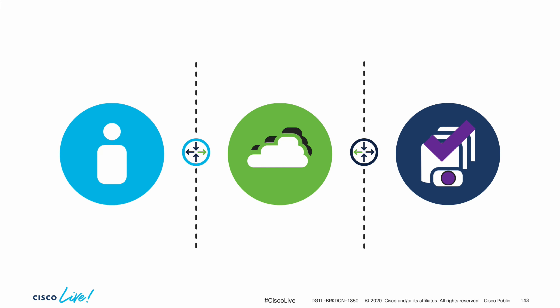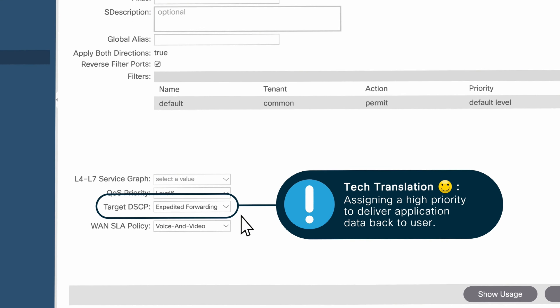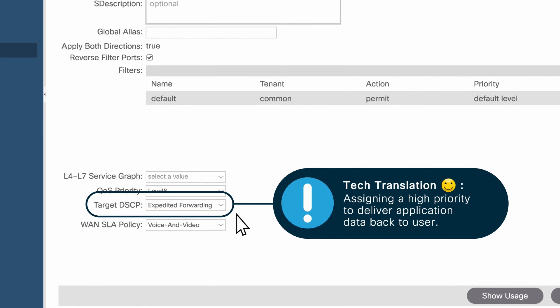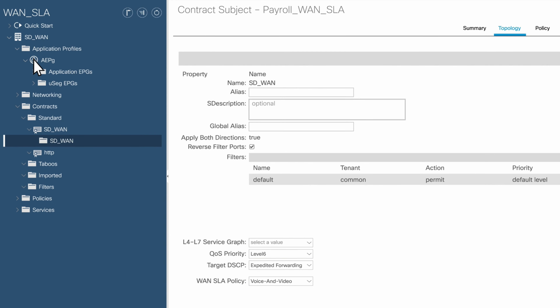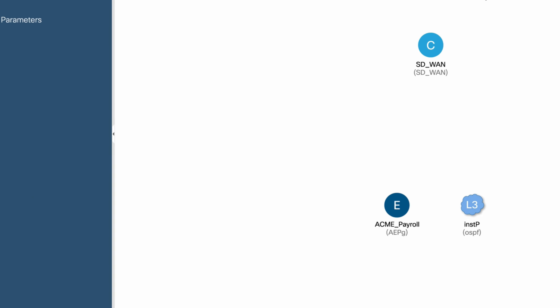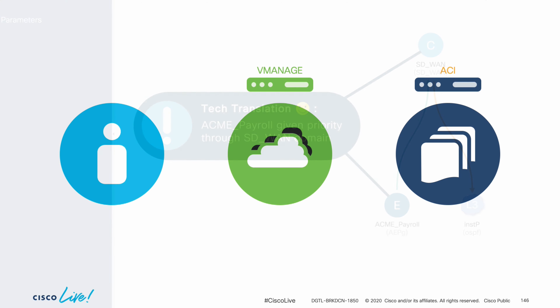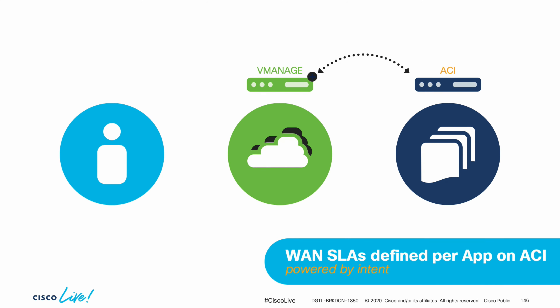If we zoom into ACI within the data center, we also want to make sure that the payroll app traffic gets prioritized over other types of traffic, since we want to provide the best possible experience for the users accessing it — we want to make sure we receive our paychecks in time. Therefore, within ACI and as part of its integration with SD-WAN, I can simply create an SLA contract specifying the acceptable levels of performance, and this will simultaneously create the same SLA settings and prioritization at the WAN level on vManage within the SD-WAN environment itself.